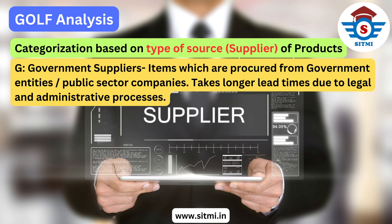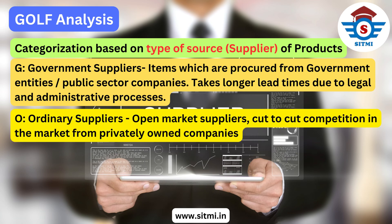The second source is O, which stands for ordinary suppliers. Ordinary suppliers are basically open market suppliers — non-government suppliers — and there is cut-throat competition in the market from privately owned companies. Materials sourced from ordinary suppliers usually have lesser lead times due to the easy availability of products from multiple sources.